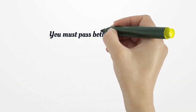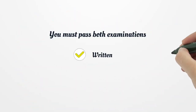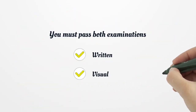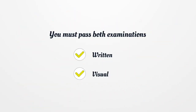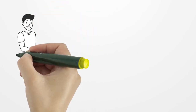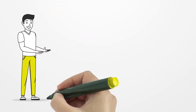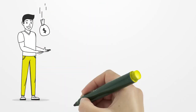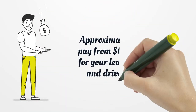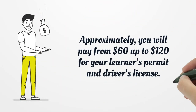You must pass both examinations: written and visual. Approximately, you will pay from $60 up to $120 for your learner's permit and driver's license.